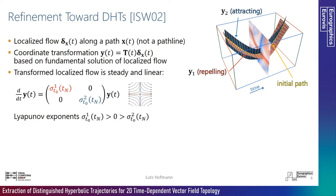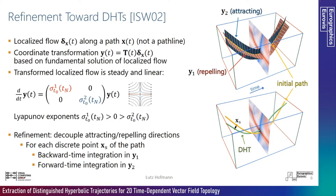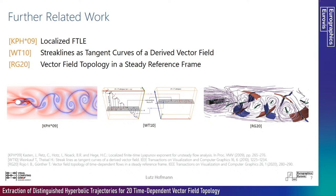The pathline can be replaced by an arbitrary path near a hyperbolic trajectory. Based on the fundamental solution of the localized flow along this path, one can construct a coordinate transformation that converts the localized flow into a steady, linear flow. The matrix defining this linear flow is diagonal, with entries given by the finite-time Lyapunov exponents. In this coordinate frame, the attracting and repelling directions are decoupled, allowing integration in backward time along the repelling direction and forward time along the attracting direction — yielding a refinement toward a hyperbolic trajectory for each point of the initial path.